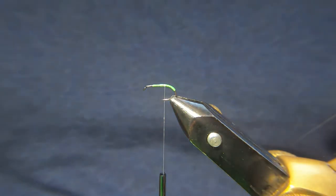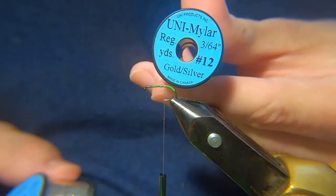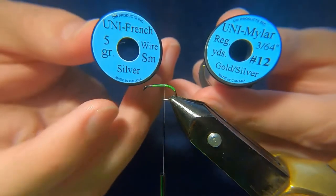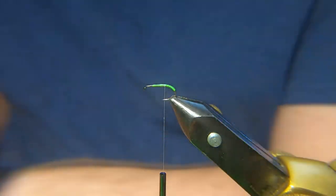For the body I'm going to use a combination of some uni mylar, this is a gold silver, size 12, and just some uni French wire, this is a small silver.